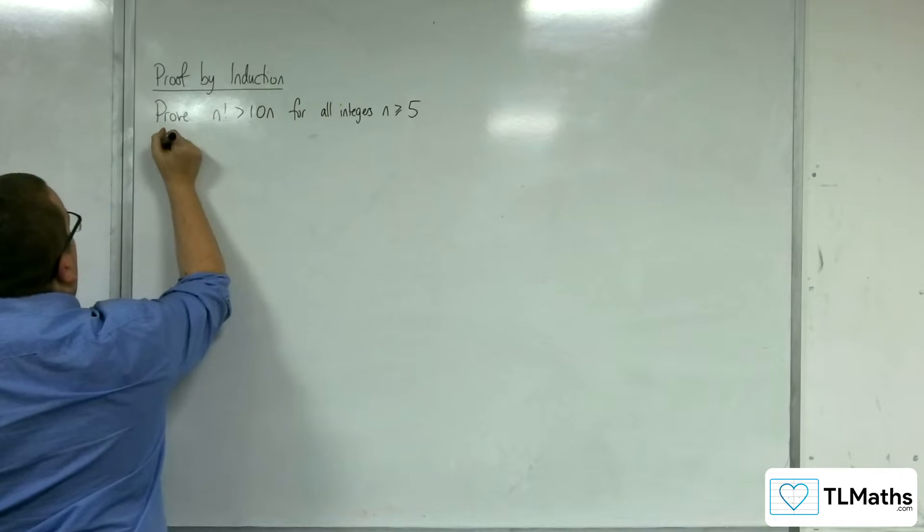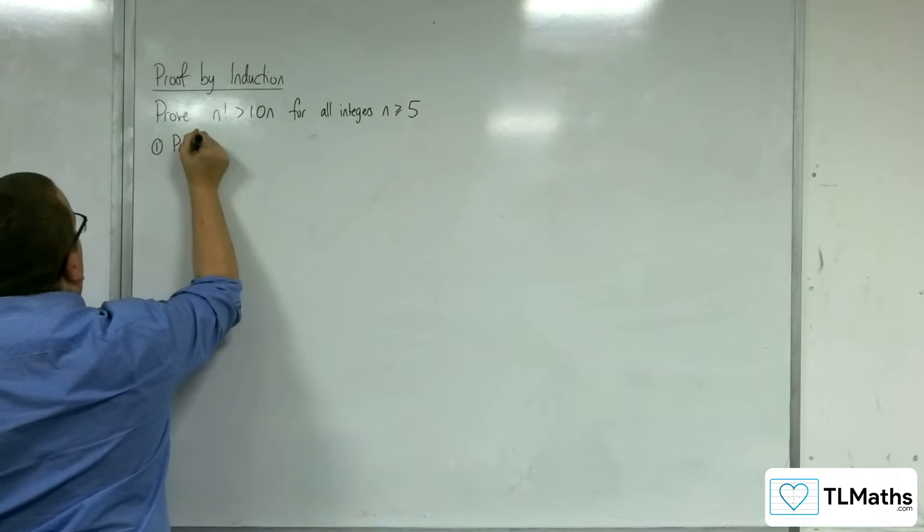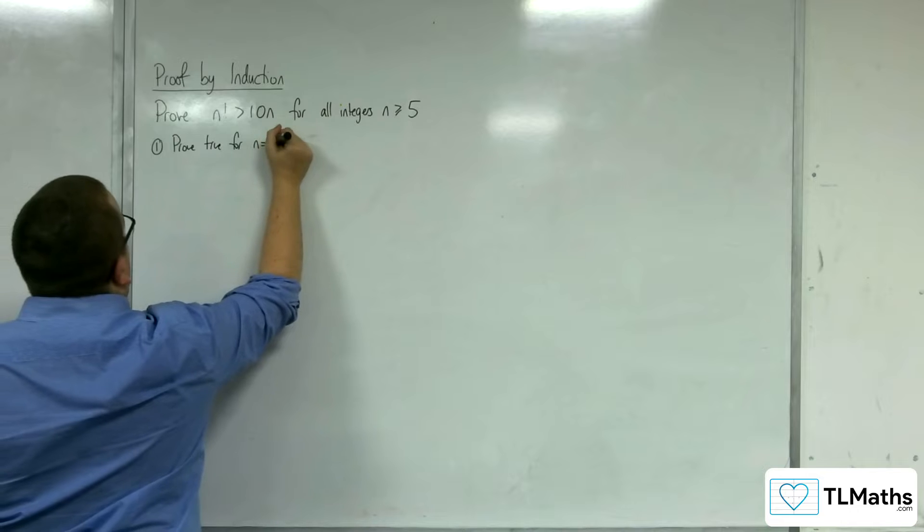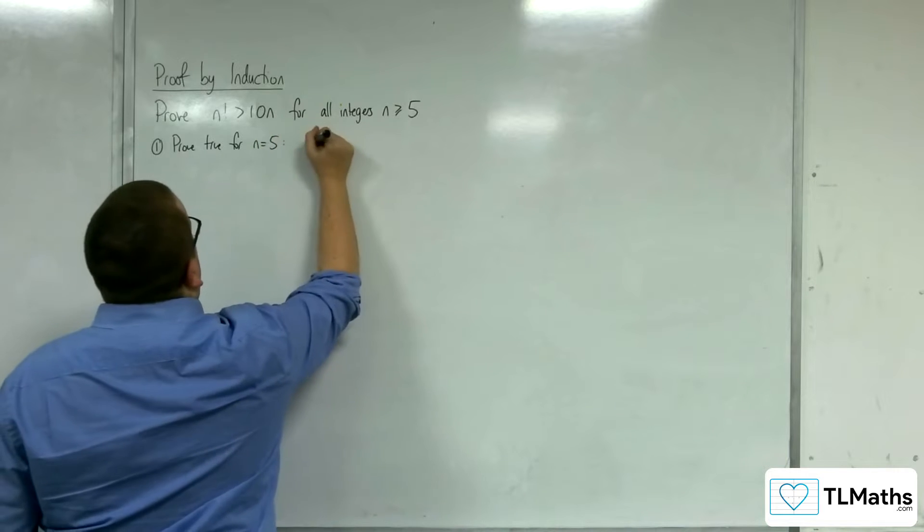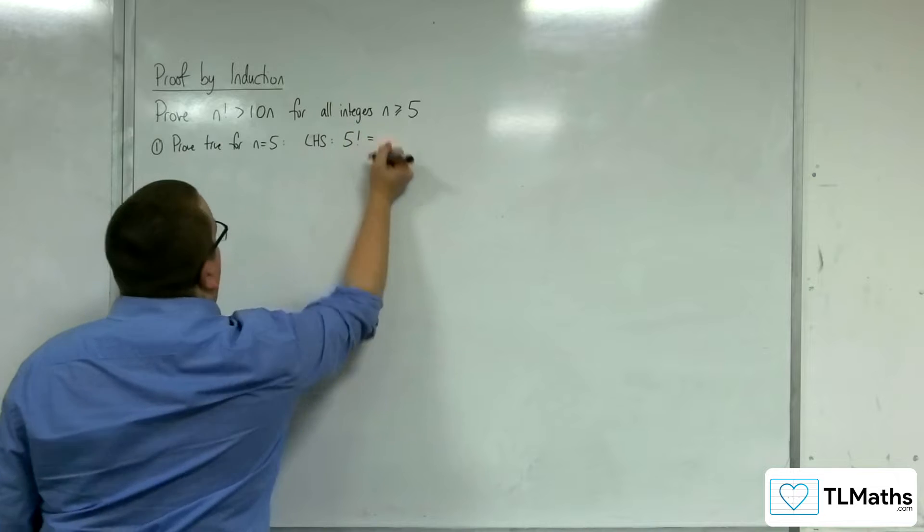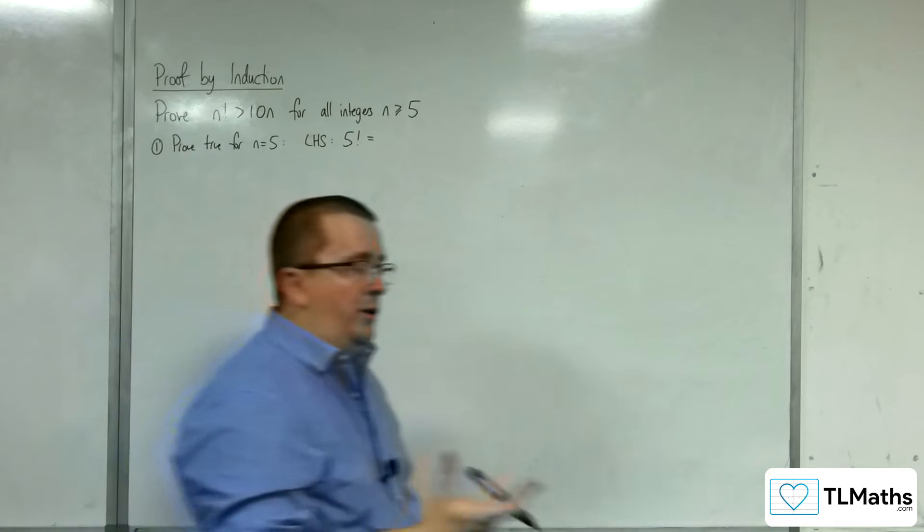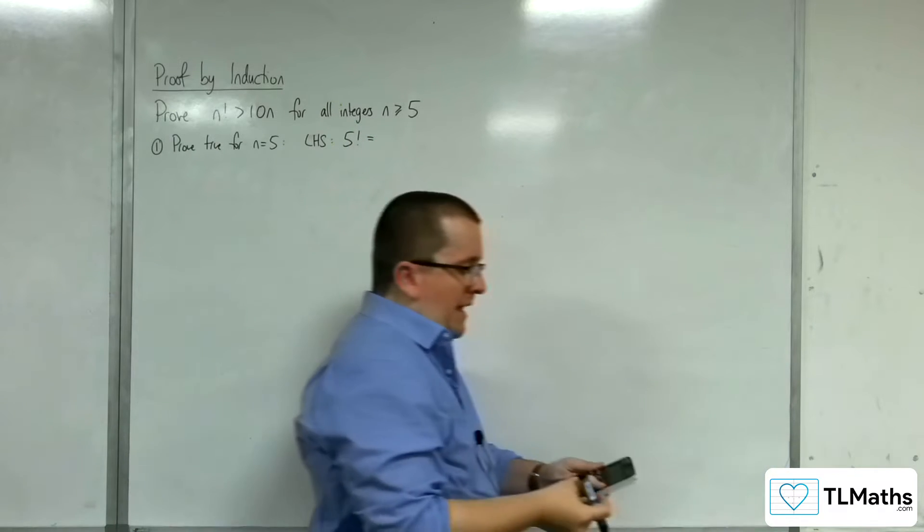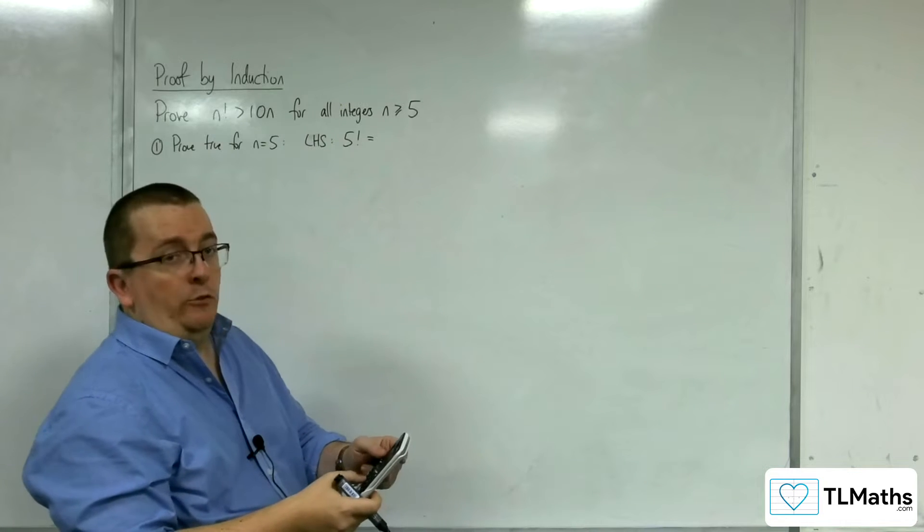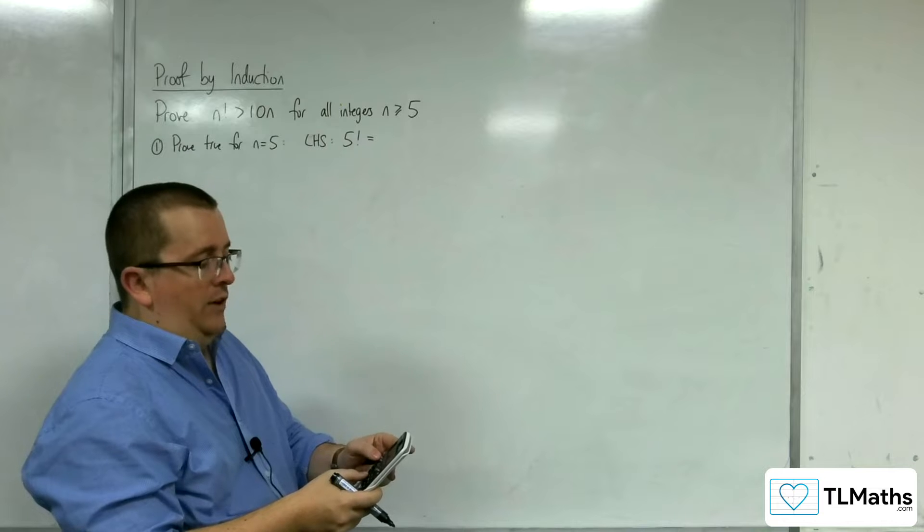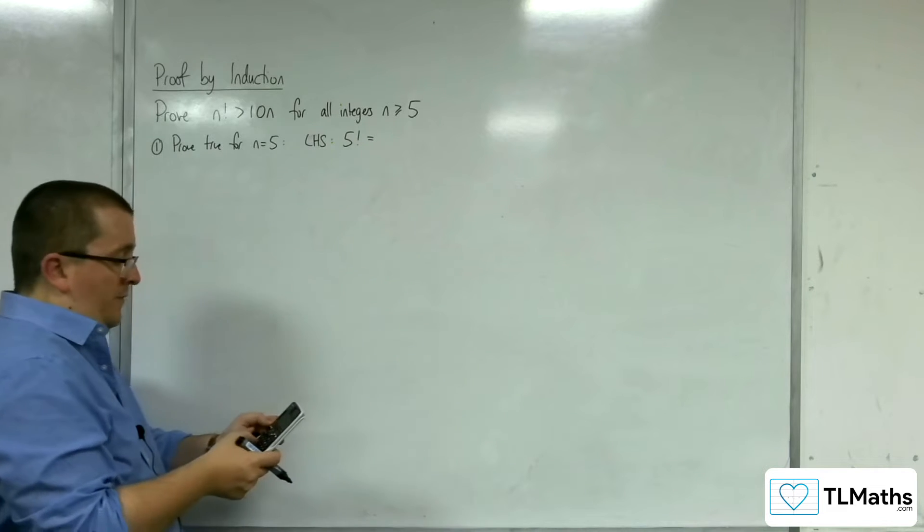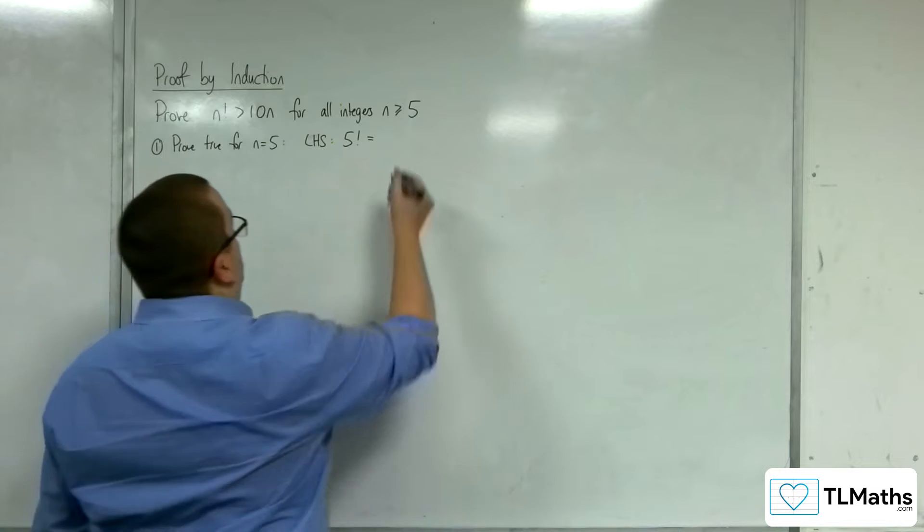First of all, we need to prove true for n equals 5. So the left-hand side, we need 5 factorial. Now, 5 factorial is 5 times 4 times 3 times 2 times 1. There is a factorial button on your calculator. It's just above the x to the minus 1 button on a Casio ClassWiz. So, 5 and then shift and then that button gets us the 120.